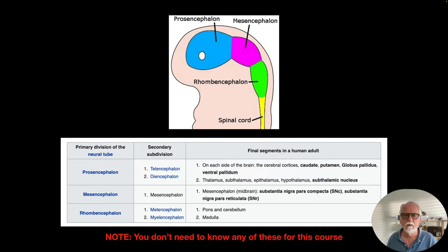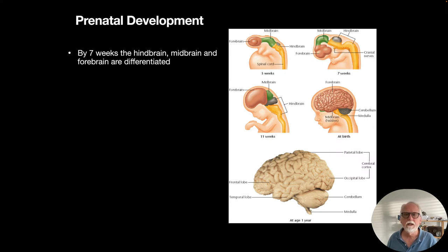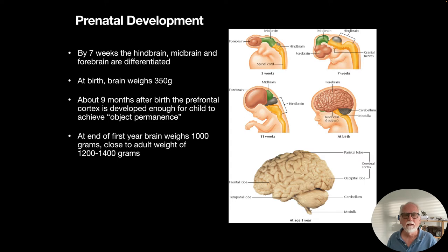In prenatal development, by seven weeks the hindbrain, midbrain, and forebrain are well differentiated. At birth the brain weighs 350 grams, but by about nine months after birth the prefrontal cortex is already developed enough for the child to achieve object permanence. At the end of the first year the brain weighs about 1,000 grams, close to the adult weight of 1,200 to 1,400 grams.